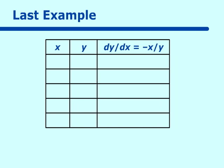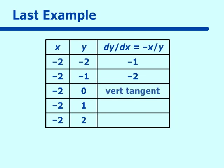If we start with x equal to negative 2 and do all those values of y — negative 2, negative 1, 0, 1, and 2 — we get: for (−2, −2), dy/dx equals negative 1; for (−2, −1), it is negative 2; for (−2, 0), it isn't defined, but it's a vertical tangent; for (−2, 1), it's 2; and for (−2, 2), it is 1. These are the slopes we will graph.